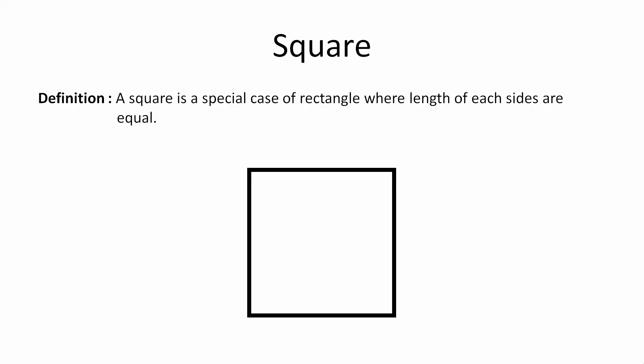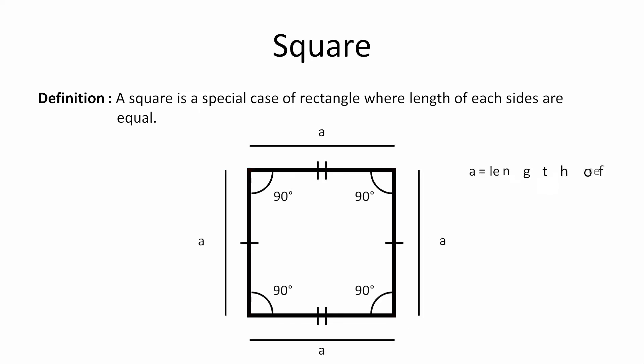Now let's come to the next topic, which is square. Basically, a square is a special case of a rectangle where the length of each side is equal. There is no specific function to draw a square in the graphics.h library, so we will use the same rectangle function to do this.